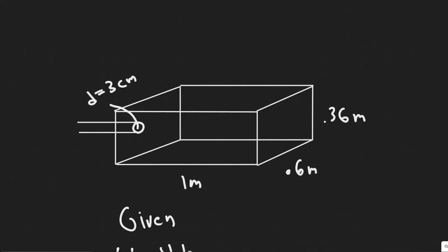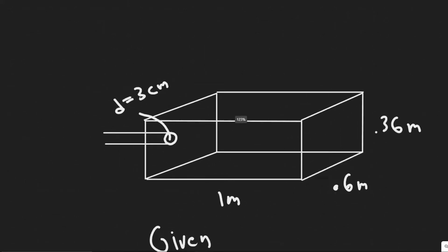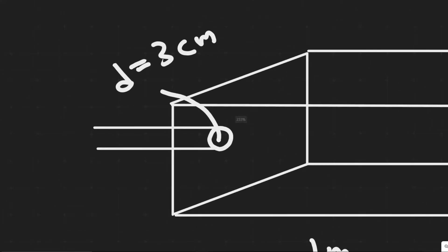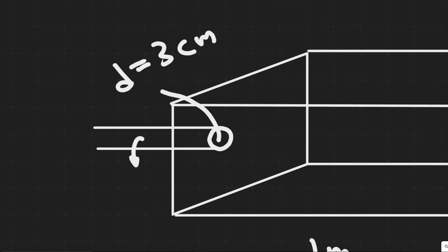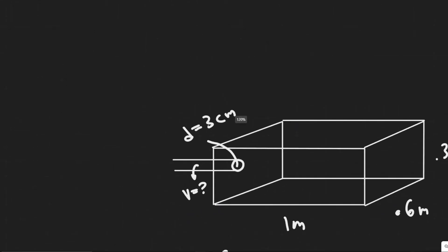In this problem we're told that a fish tank has dimensions 36 centimeters wide by 1 meter long by 0.6 meters high. If the filter should process all the water in the tank once every 4 hours, what should the flow speed be in the 3 centimeter diameter input tube for the filter? We're going to be figuring out the flow speed of the water in this tube — the velocity of the water. So V equals question mark, since that's what we're solving for.